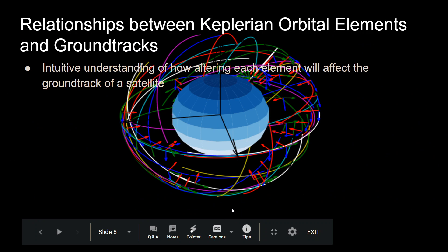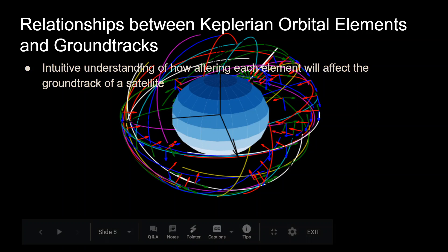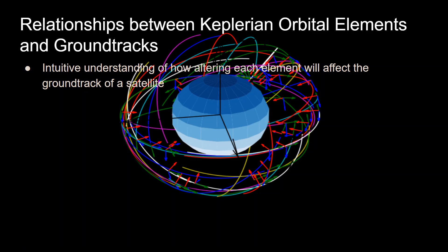That's it for this video. Please give a like if you found it helpful. In the next video, I'll go over the relationships between each individual orbital element and the ground track, giving an intuitive understanding of how altering each element affects a satellite's ground track. Let me know your questions in the comments — thank you for watching.